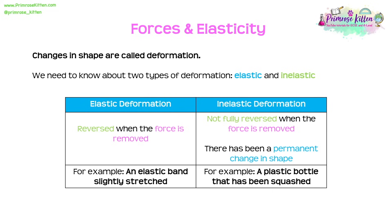Elastic deformation is reversed when the force is removed — for example, an elastic band that gets slightly stretched will spring back to its original shape. Inelastic deformation, on the other hand, is not fully reversed when the force is removed, resulting in a permanent change in shape. A good example is a plastic bottle that's been squashed, or an elastic band stretched too far that no longer returns to its original shape.